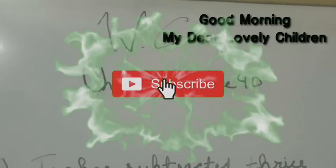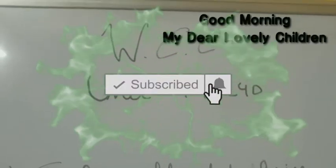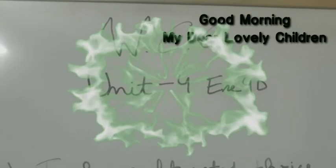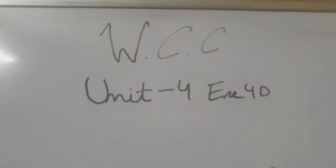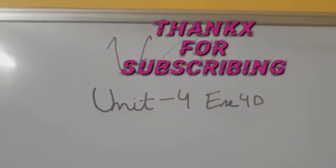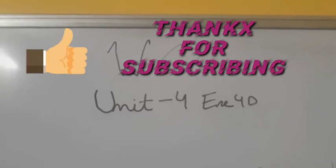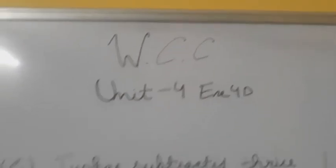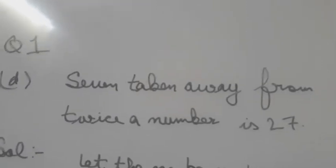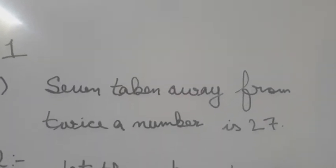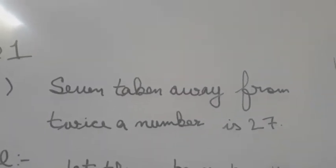Good morning students, today we will continue our exercise — fourth day. We have successfully completed question 1's first three parts. Now it's time for question number 1, part D. Let's check it out: '7 taken away from twice a number is 27'.